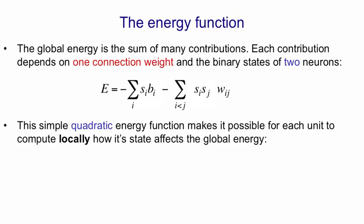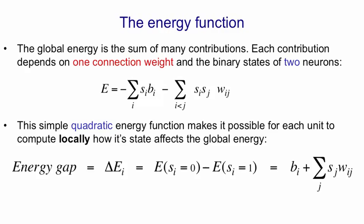The quadratic energy function makes it possible for each unit to compute locally how changing its state will change the global energy. So we first need to define the energy gap. The energy gap for a unit i is the difference in the global energy of the whole configuration depending on whether or not i is on. The energy gap we're going to actually define as the difference between the energy when i is off and the energy when i is on. And that difference is just what's being computed by the binary threshold decision rule.